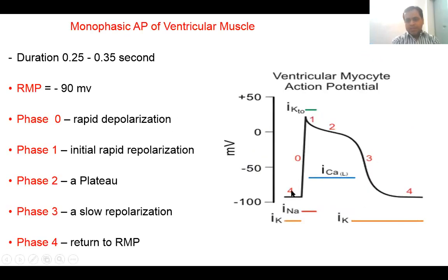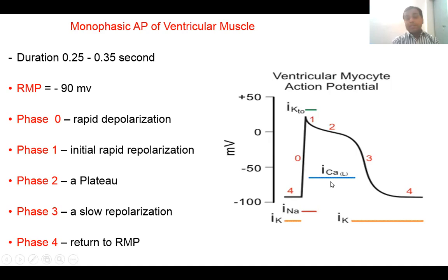The ventricular action potential is the monophasic action potential, showing only depolarization followed by repolarization, with a normal duration of 0.25 to 0.35 seconds. The resting membrane potential of a ventricular myocyte is about minus 90 millivolts. The phases observed are phase zero, phase one, phase two, phase three, and phase four.